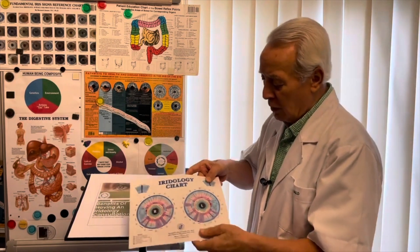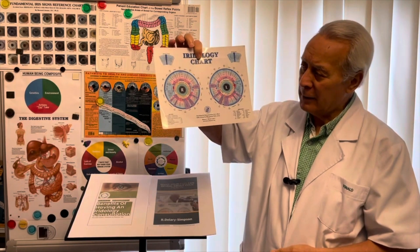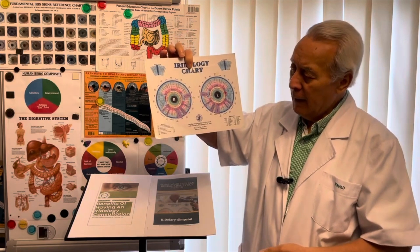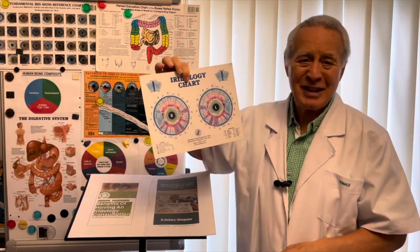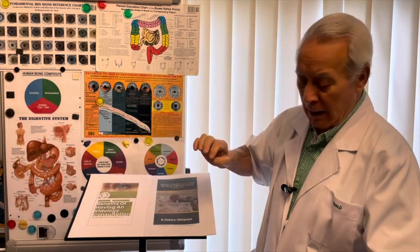Now, whilst we're at it, this is the chart we now use - the most modern iridology chart. This has been put together from up to 700,000 pairs of eyes we assessed.